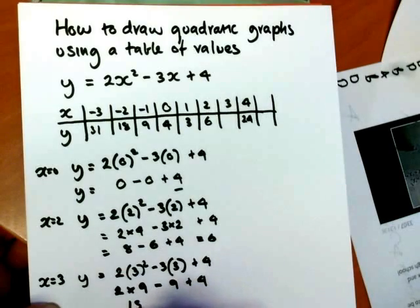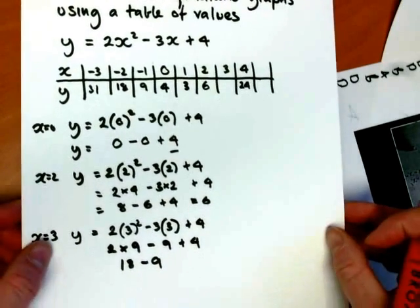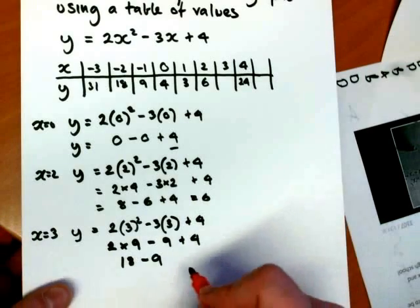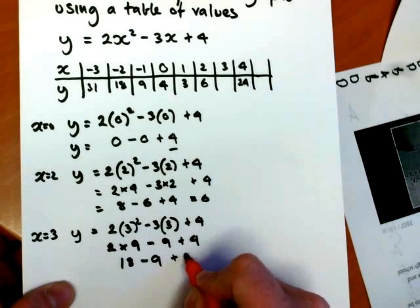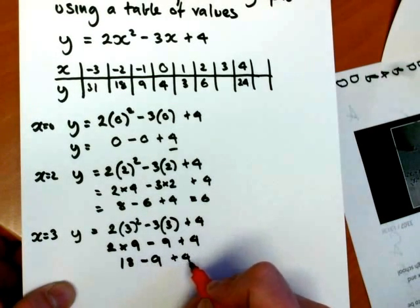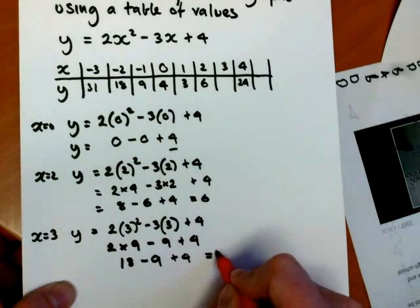So we have 18 subtract 9 plus 4. 18 take 9 is 9, and 9 and 4 is 13.